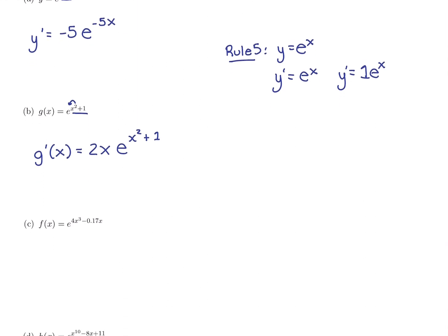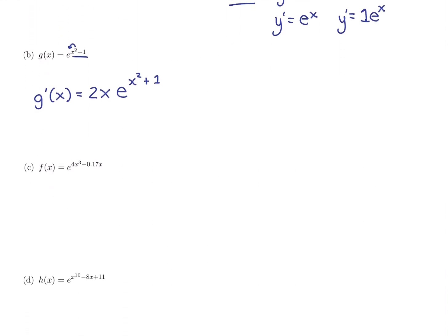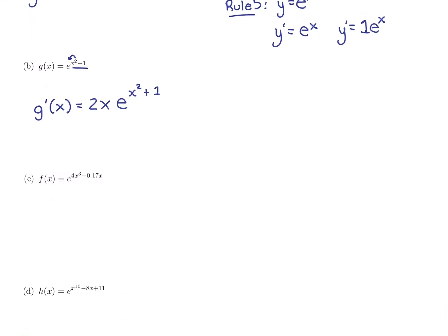Let's keep practicing this with a couple more. We have e to a power that's more than just an x, so I'm going to take the derivative of the power times e to the original power. So my f prime of x, derivative of the power - 4 times 3 is going to give me 12x squared. Derivative of negative 0.17x is negative 0.17. There's my derivative of the power times e to the original power.